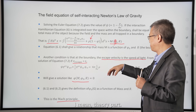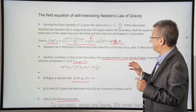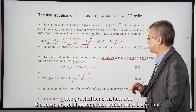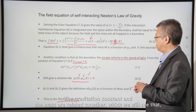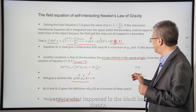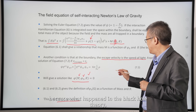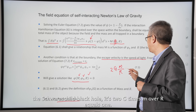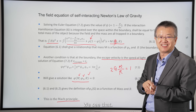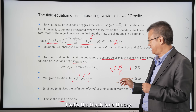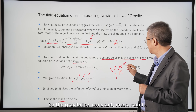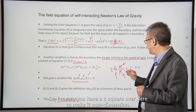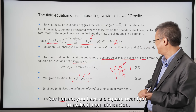What we derived is the self-interacting Newton's law of gravity, where the object has a boundary, the gravitational constant is related to mass distribution — that's Mach's principle — and the self-interaction term is introduced. The radius, gravitational constant, and mass are related together. This is analogous to the Schwarzschild black hole condition: 2GM over Rc squared equals one, where gravitational constant, mass, and radius are all related.